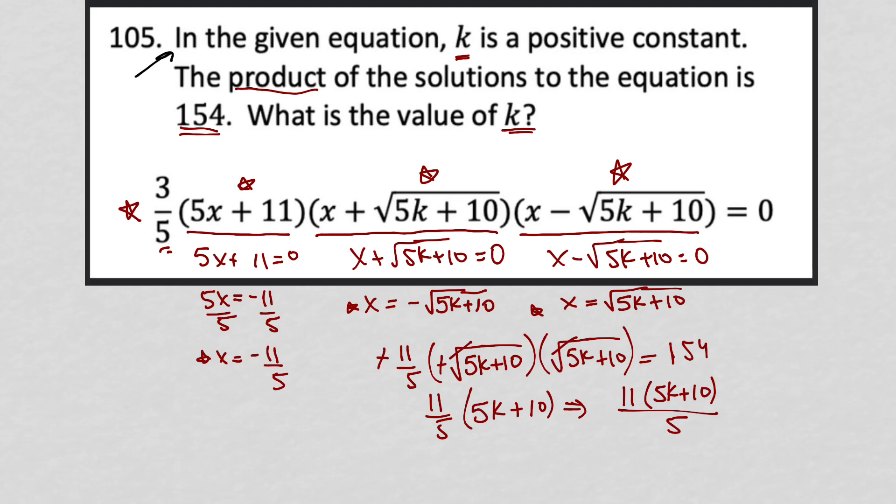Into 5 times k plus 2, right? So 5k plus 10 becomes 5 parentheses k plus 2, and I'm just doing that so that the 5s can cross out here. So I'd be left with 11k plus 2.